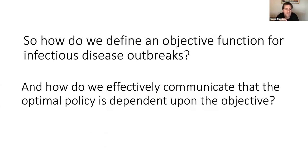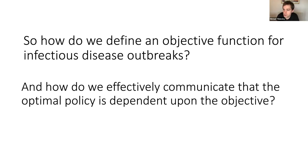We have defined a couple of objective functions that are by no means the correct objective functions for any infectious disease outbreak — really just to motivate discussions. So: how do we define an objective function for an infectious disease outbreak? And how do we effectively communicate it? Throughout the pandemic, we've dealt with people who think we should stay in lockdown forever or drop lockdown and go back to normal immediately. The truth is somewhere in between, dependent upon the objective, and it's something we have had a real challenge to communicate for the last two years in the media but is extremely important.